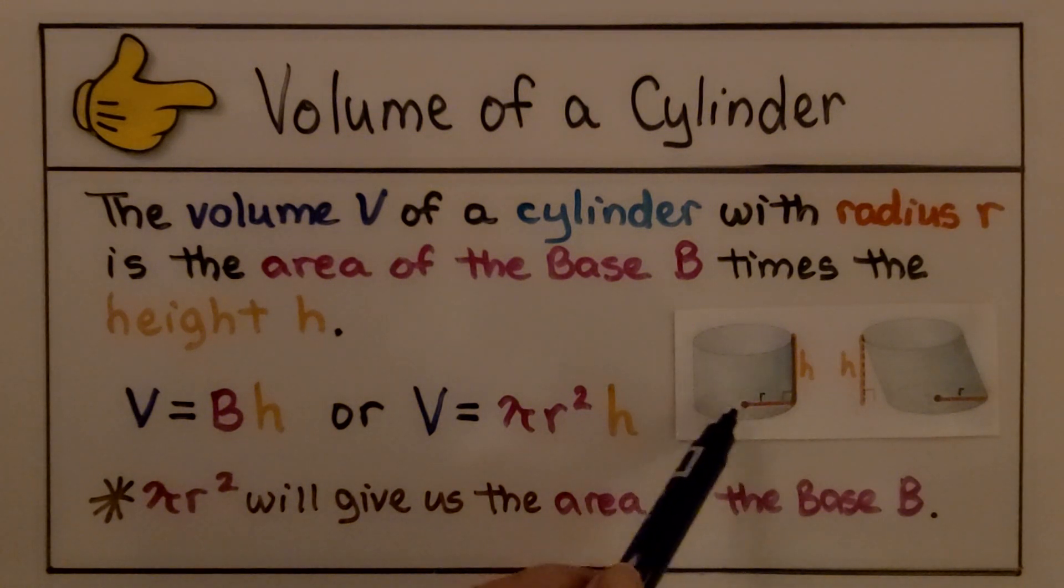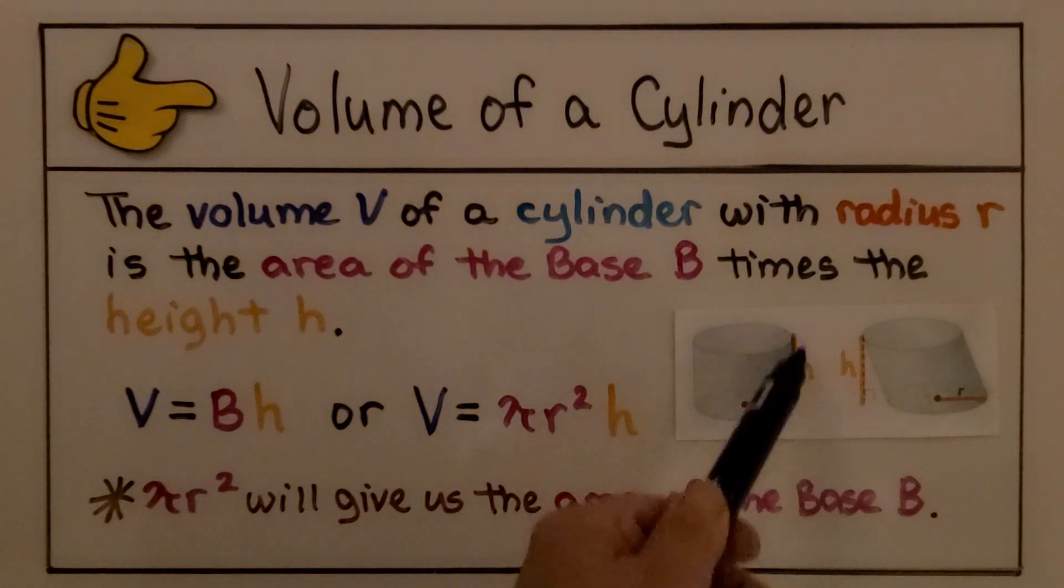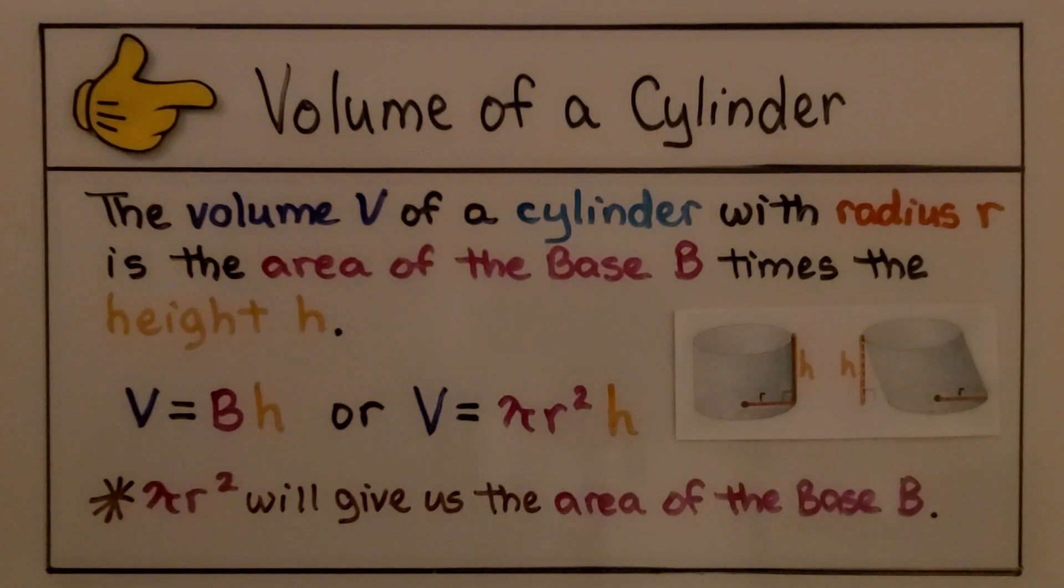It's the radius of the base and its height. We do volume is equal to base times height. Or, because pi r squared will give us the area of a circle for the base, we can do volume is equal to pi r squared h. We use pi r squared for the base B.